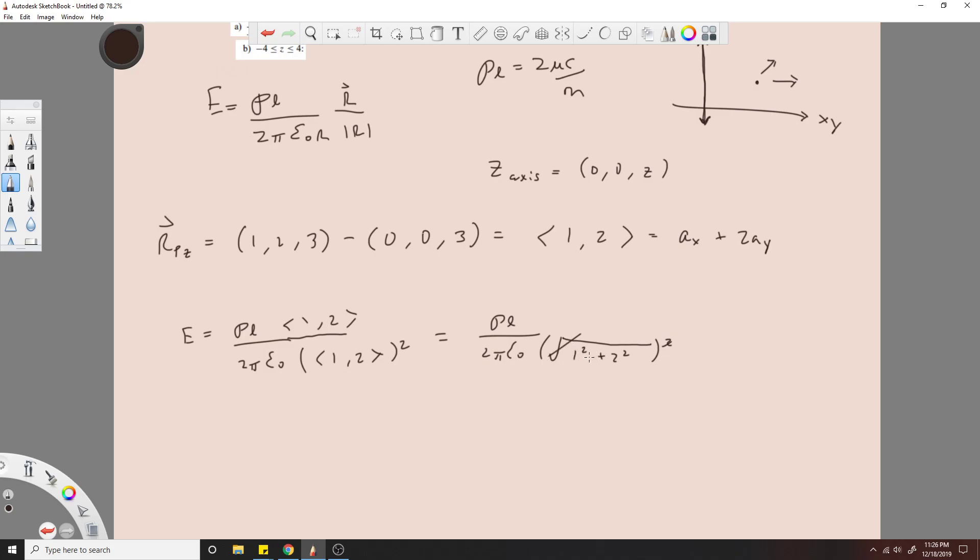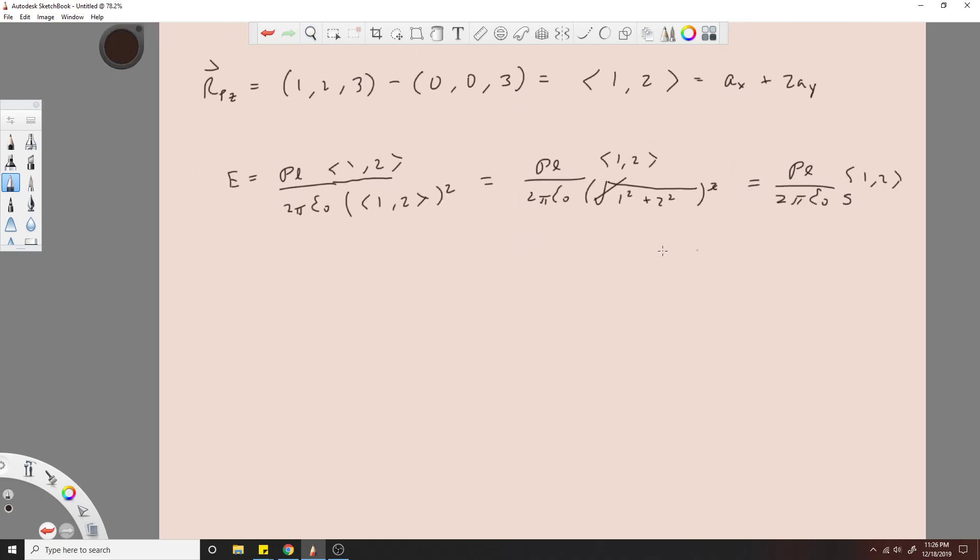So you know this is going to cancel with the square root, right? This is going to be a 5, and you still have this 1, 2 up here. And then that's your answer, rho L over 2 pi epsilon naught 5, 1, 2. And E equals, that'll be a 10. I'm just combining this 2 and naught 5.